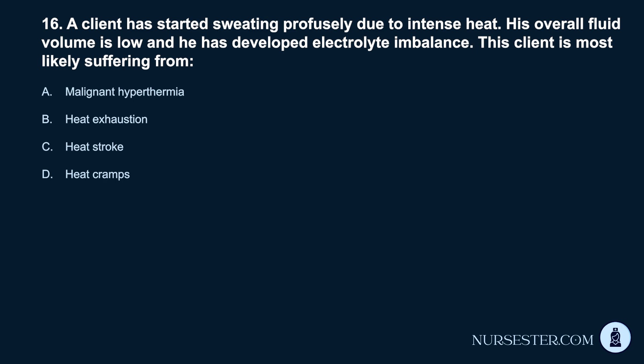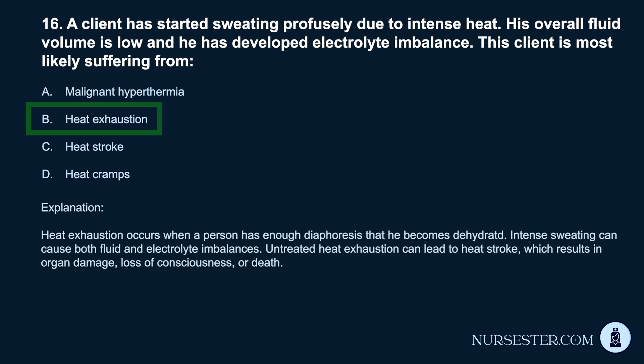Question 16. A client has started sweating profusely due to intense heat. His overall fluid volume is low and he has developed electrolyte imbalance. This client is most likely suffering from: a. Malignant hyperthermia. b. Heat exhaustion. c. Heat stroke. d. Heat cramps. Correct answer: b. Heat exhaustion. Heat exhaustion occurs when a person has enough diaphoresis that he becomes dehydrated. Intense sweating can cause both fluid and electrolyte imbalances. Untreated heat exhaustion can lead to heat stroke, which results in organ damage, loss of consciousness, or death.